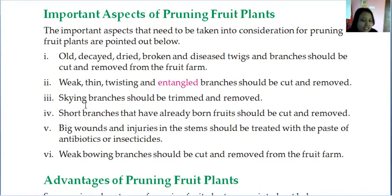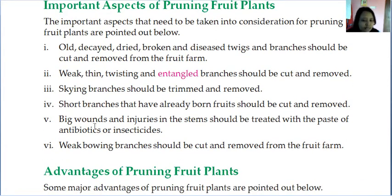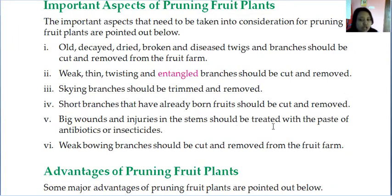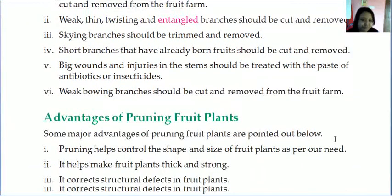Scrying branches — those branches that are growing very tall — should also be trimmed. Branches that have already borne fruits should be cut and removed. Big wounds or injuries in the stems should be treated with a paste of antibiotics and insecticides. This treatment is especially done for big plants and trees, because in a small plant, a big wound will generally cause it to die. Branches with growing issues should also be removed from the fruit farm.